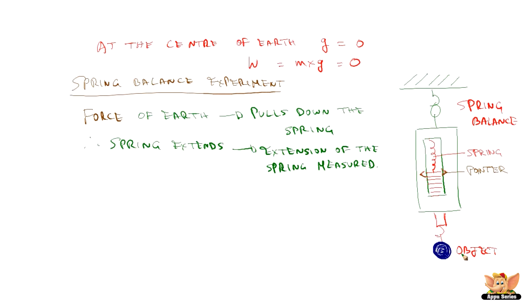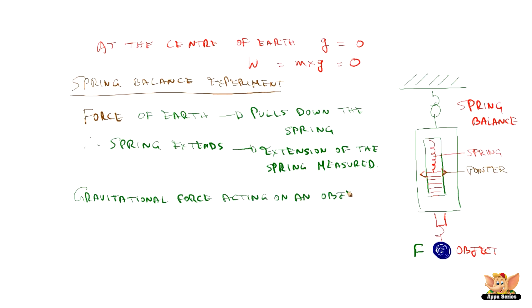The gravitational force acting on an object operates the spring balance, not its mass. The gravitational force acting on the object causes the spring to extend — not the mass of the object. In the absence of gravitational force, there will be no extension of the spring. So we conclude that the gravitational force acting on an object operates the spring balance, not the mass.